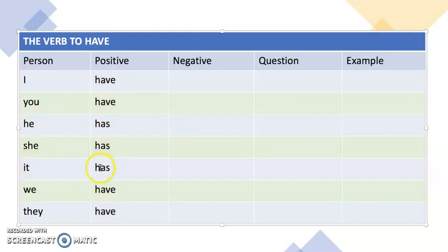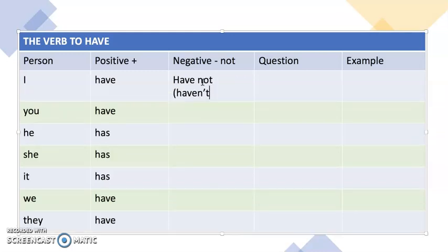The negative is we just want to add the word not. And again, we can make it shorter. We can say I have not or I haven't. You have not or you haven't—exactly the same. Remember, haven't. And that would go the same for we and they: we have, we haven't, they have, they haven't.